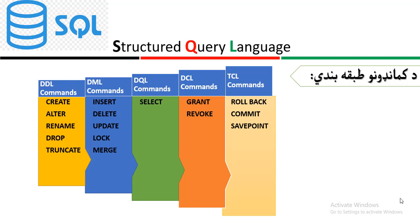The first category is DDL, or Data Definition Language commands: create, alter, rename, drop, truncate. These are used with different types of databases.